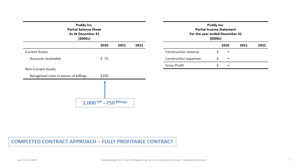Once we have our account balances, we can determine what appears on the balance sheet and income statement. For the 2020 balance sheet, we have $75,000 in accounts receivable and $250,000 in construction in progress. The wording is slightly different here — because we're not recording any revenues and only booking costs, we show recognized costs in excess of billings. The CIP balance of $1 million offset against the $750,000 billings gives a net balance of $250,000, classified as a non-current asset.